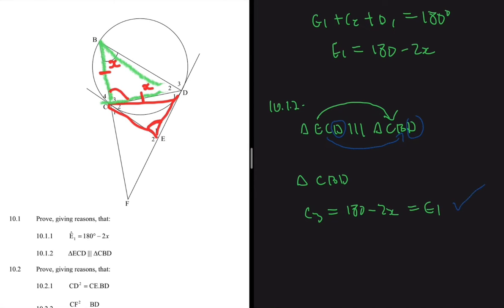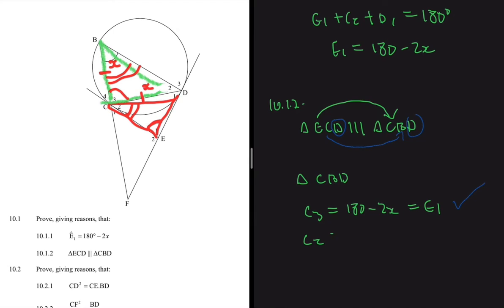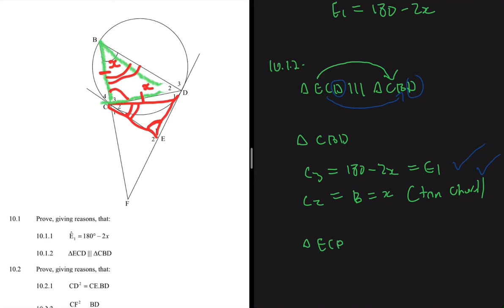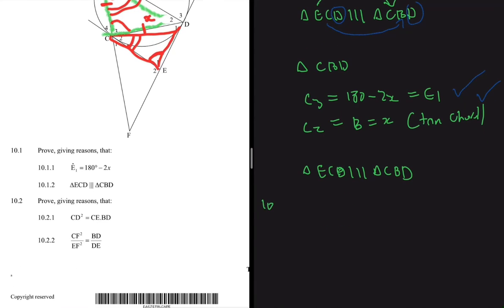Now, angle C in triangle ECD is C2, and we've already proved it equals angle B by the tan-chord theorem, so C2 equals angle B equals x. We've now proved two angles equal in the two triangles, so the third angle is automatically equal since all angles must add up to 180. We conclude that triangle ECD is similar to triangle CBD. Pay attention to the letter order when solving this type of problem.